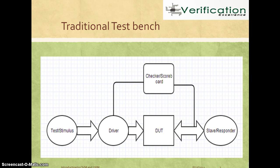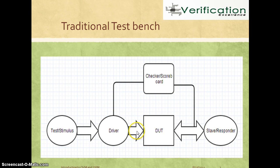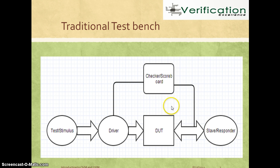This diagram shows how a traditional test bench will look like. You have a DUT, or design under test, which is to be verified. You typically have a stimulus part which includes a test or stimulus generator along with a driver that drives stimulus to the design. You might also have a slave or responder that responds to the outputs from the DUT, and then a checker or scoreboard that taps into driver or interface signals and checks whether the behavior of the design is correct. In a traditional test bench you don't really separate the driver from a monitor or pin-level interface.